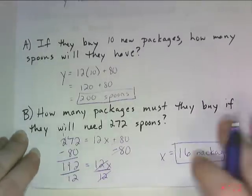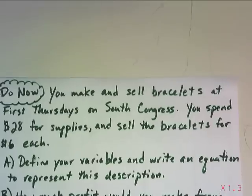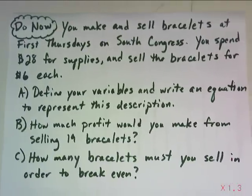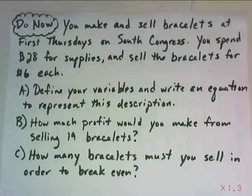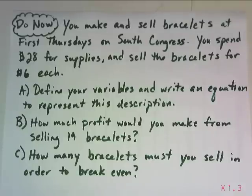Now it's your turn to try. You make and sell bracelets at First Thursdays on South Congress. You spend $28 for supplies and sell the bracelets for $6 each. I want you to: define your variables and write an equation to represent this description; find how much profit you'd make from selling 19 bracelets; and find how many bracelets you must sell in order to break even. Break even means we don't make any profit but we don't lose any money either. Pause the video now and solve this.